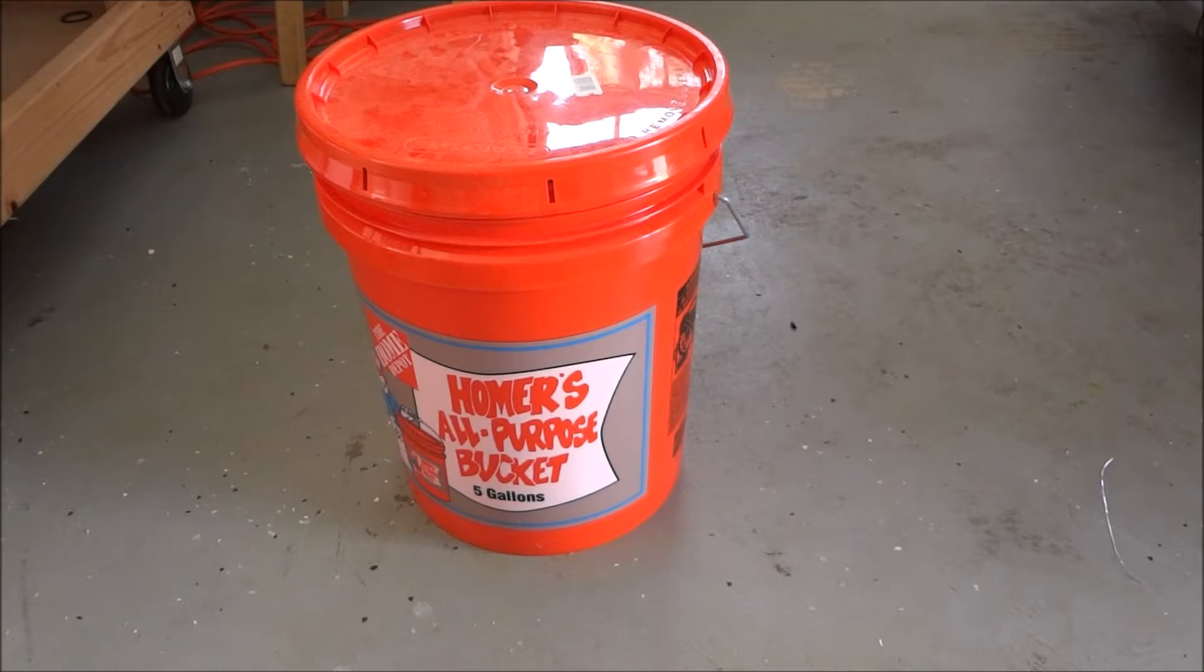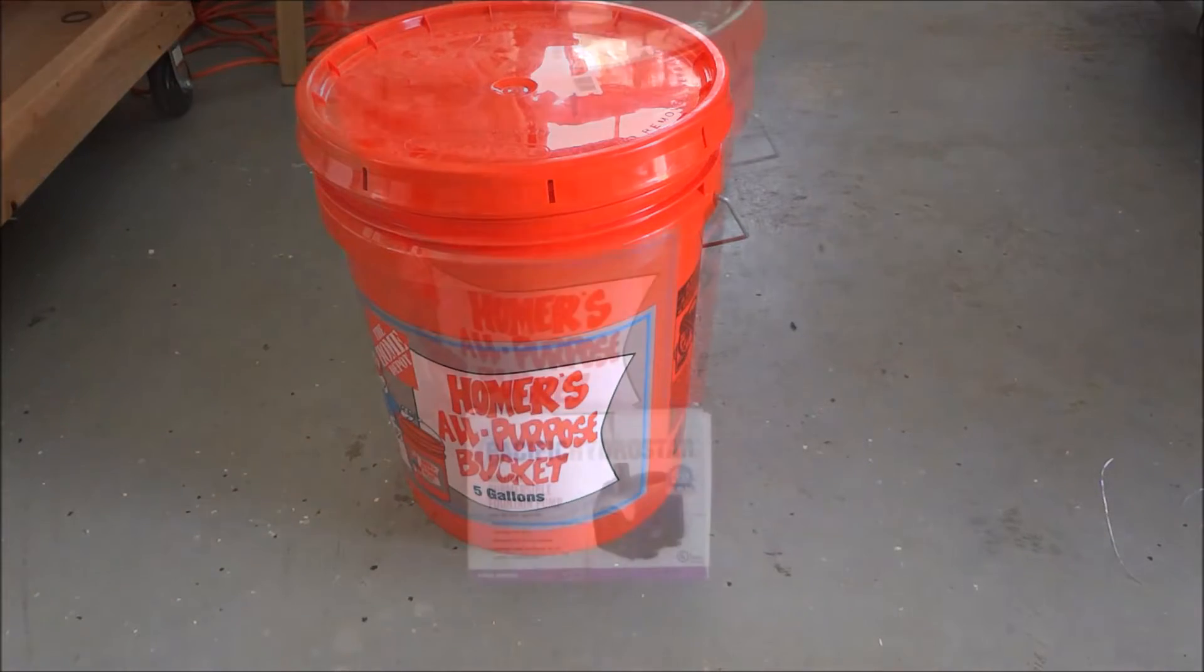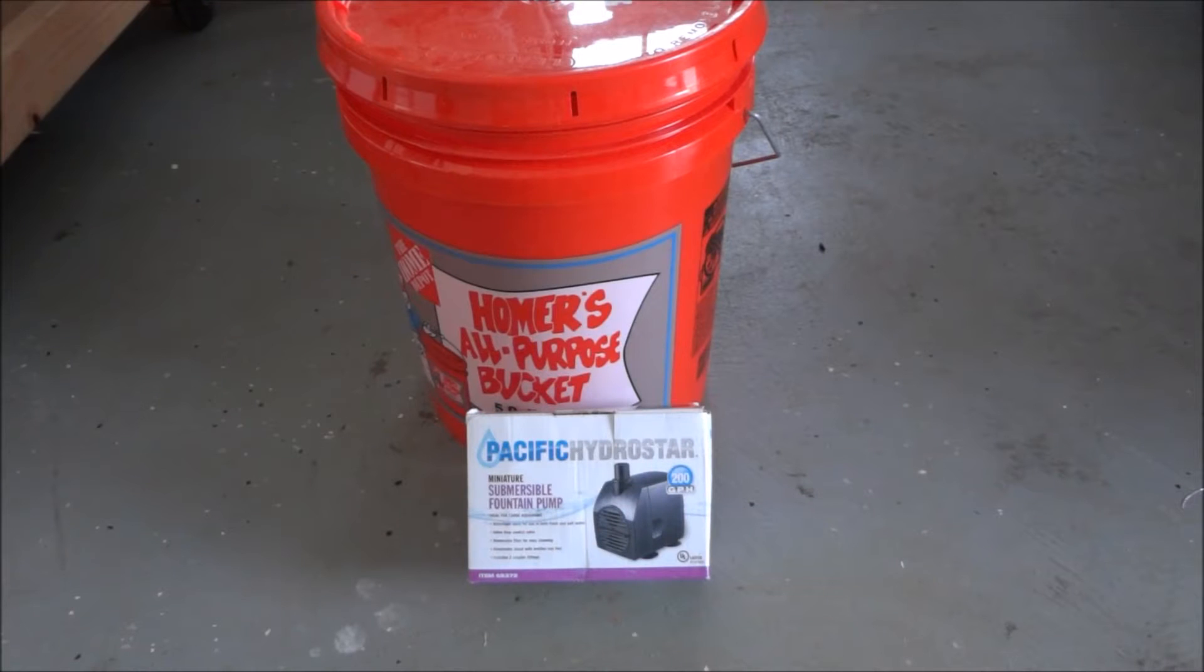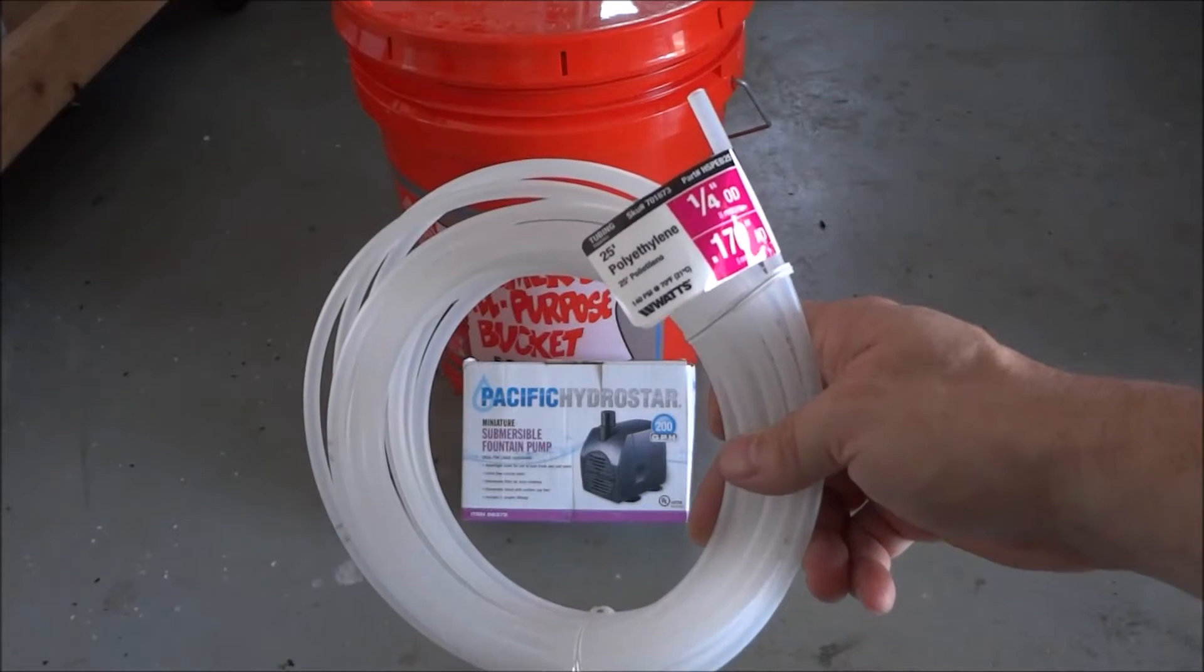The materials we're going to use for our flood coolant: a five gallon bucket you can pick up at your local home center, and a miniature fountain pump. This particular pump was only about 20 dollars. It's 200 gallons per hour, very small and inexpensive, and I think it'll work just fine for the flood coolant and give me enough flow that I need.